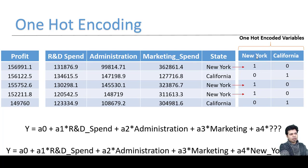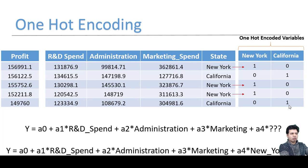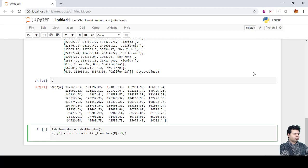We don't need to include all state columns — we exclude the 'state' and 'California' columns and include only the 'New York' column, because New York and California are mutually exclusive. The multiple linear regression library automatically handles this, avoiding the dummy variable trap. So we include just the New York column in our model.